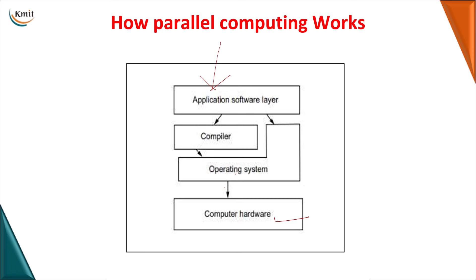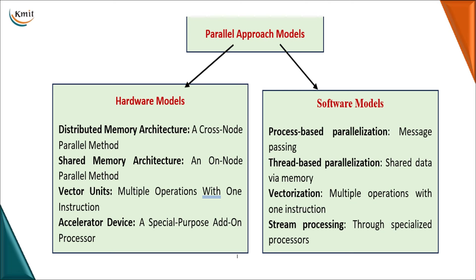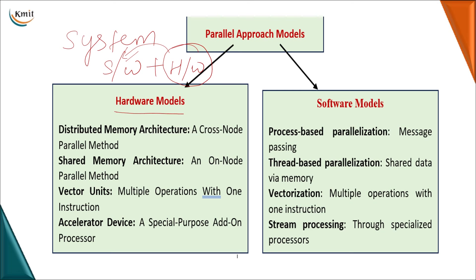As a developer, you are only interested in writing a program, which is given to the application layer — the rest is managed by your system. A system is not just software; it is a combination of hardware and software. So when you want to build a parallel system, you need hardware models as well as software models. For hardware models, you have distributed memory architecture, shared memory architecture, vector unit, and auxiliary (special processors).